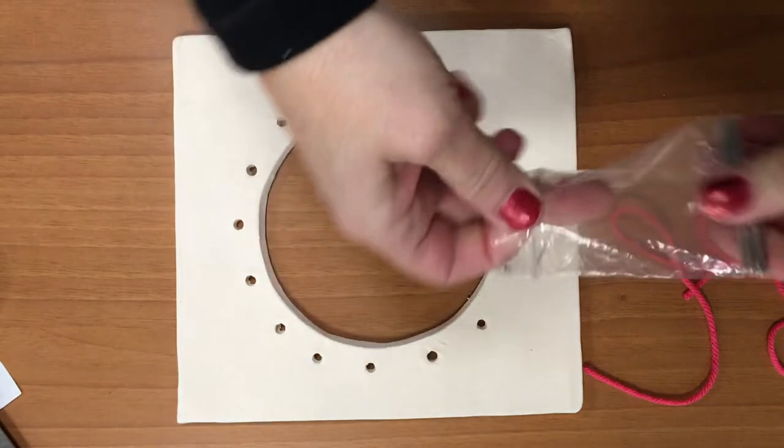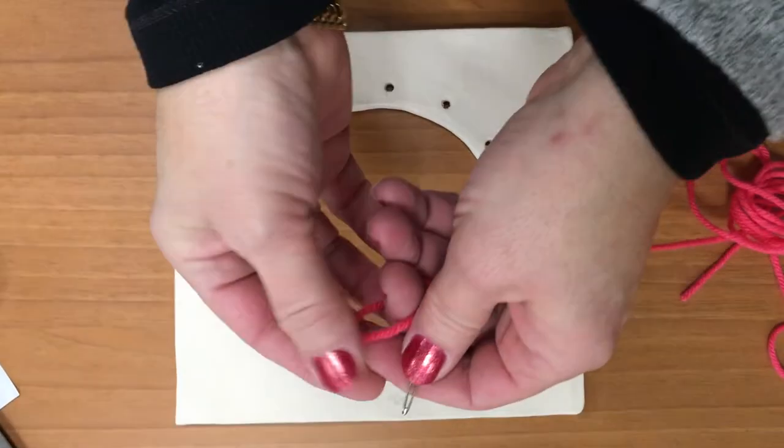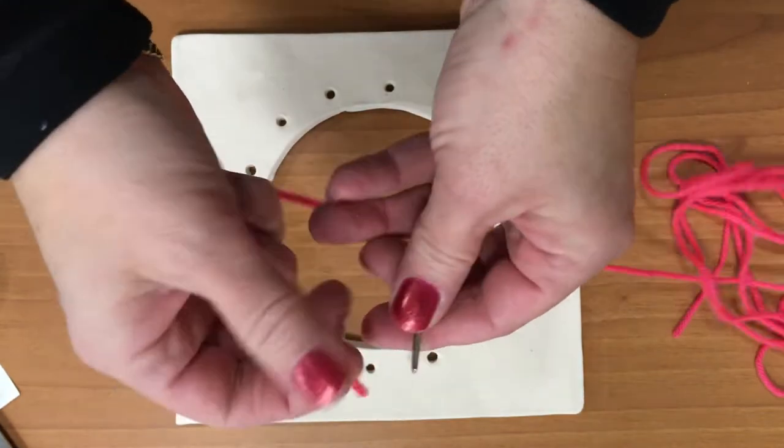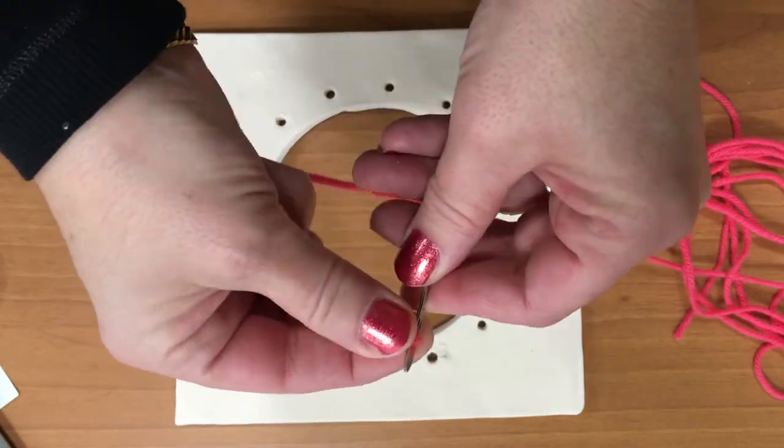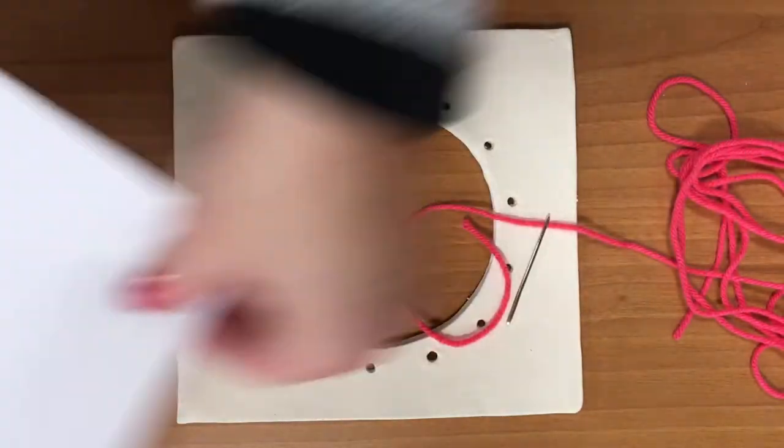And then with your needle, ideally you should be able to get it directly through the eye if your yarn is not too thick. Now I will tell you there is a little trick to getting that through.